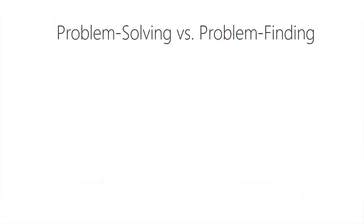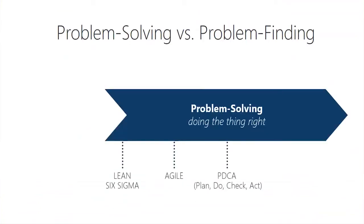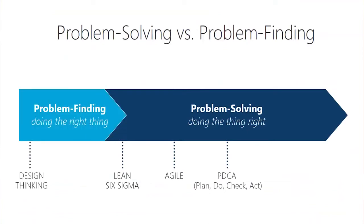One of the questions often asked is: what's the difference between design thinking and other problem solving methodologies like Lean Six Sigma, Agile, or PDCA? Those are all fantastic problem solving methodologies, each with a great use case. Where design thinking sets itself apart is that it starts before you are looking to solve the problem — it starts at problem finding. Whereas Lean Six Sigma, Agile, and PDCA start when you have that problem already identified and know what you're trying to solve.